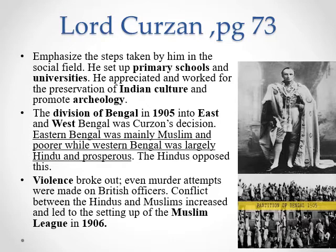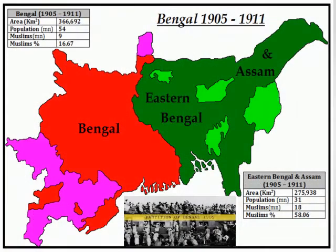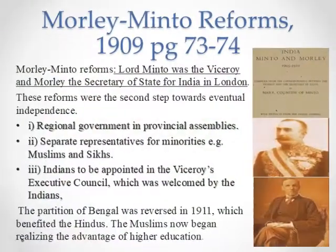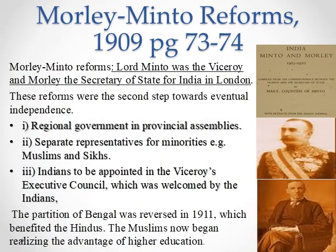In 1906 the Muslim League came into power. This was the political party for Muslims and represented the full interests of Muslims. On the map shown, red denotes Hindu majority and green denotes Muslim majority. Lord Minto was the Viceroy and Morley was the Secretary of State for India in London. Together they came up with reforms called the Morley-Minto Reforms in 1909.